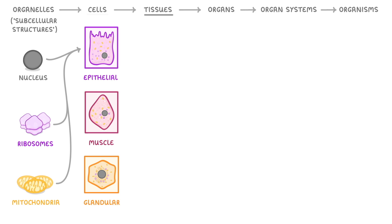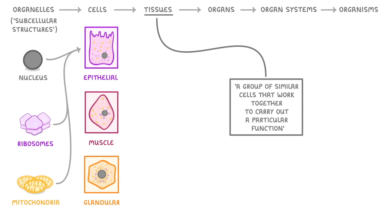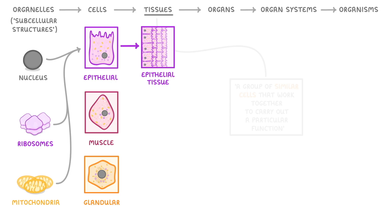Next up we have tissues, which we can describe as a group of similar cells that work together to carry out a particular function. For example, lots of epithelial cells will form epithelial tissue, which together have the function of covering the body's surfaces like our skin, or the inside of our intestines.